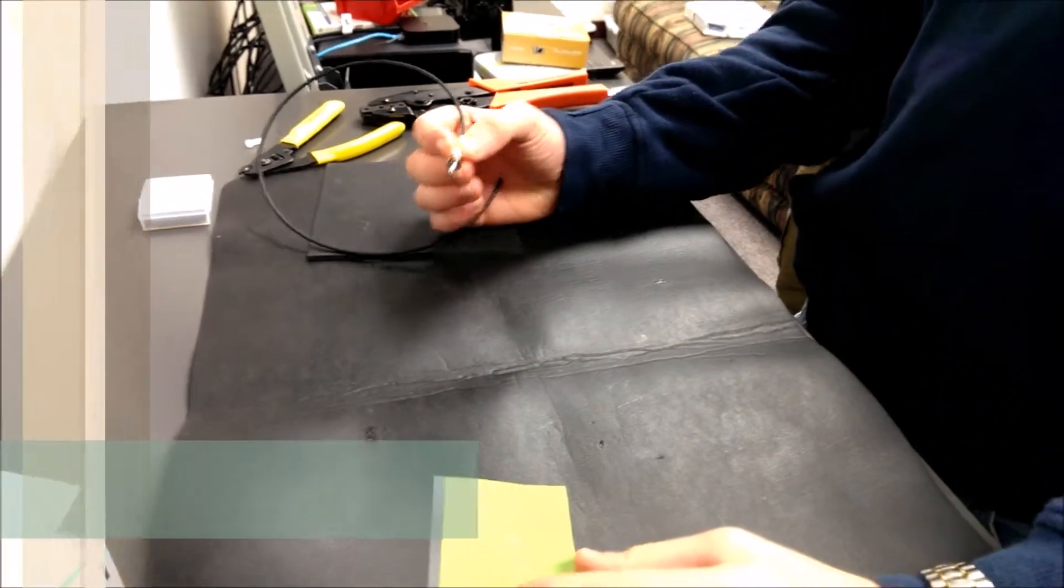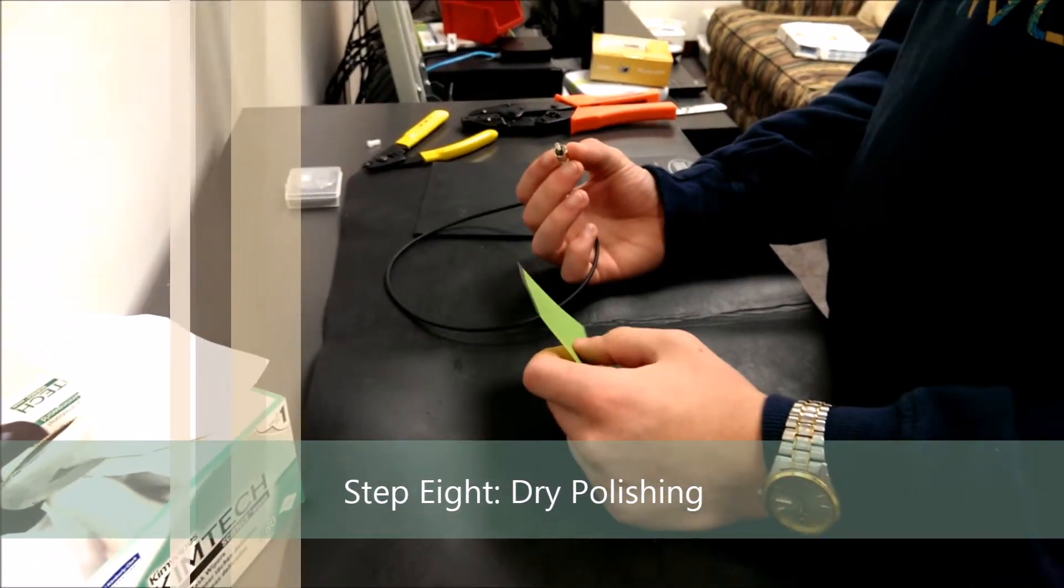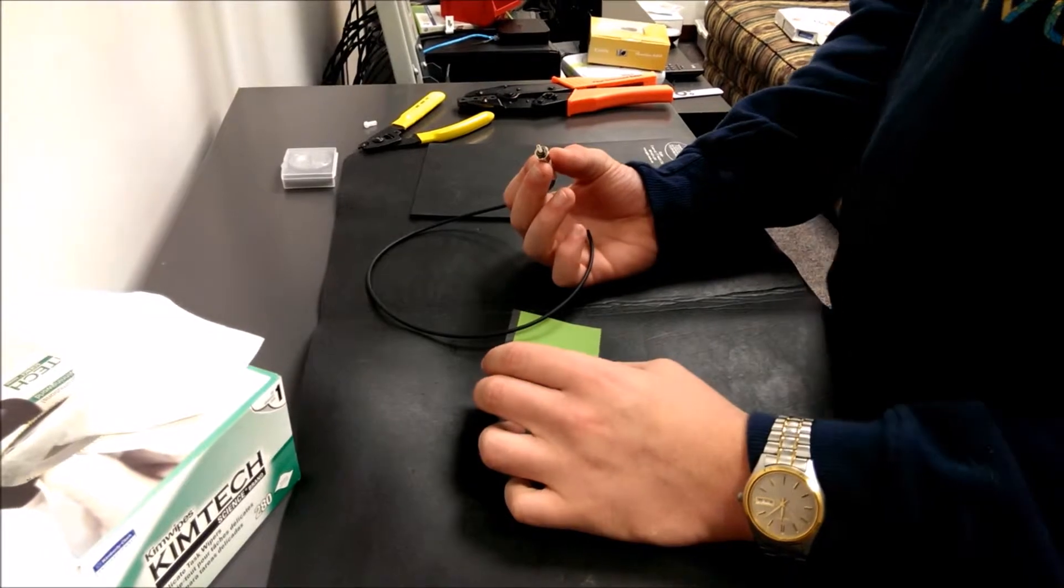So the next step that we do after scribing is using the wax paper to polish the glass down so it is no longer sticking out of the ferrule and to remove any glue that is on top of the ferrule.